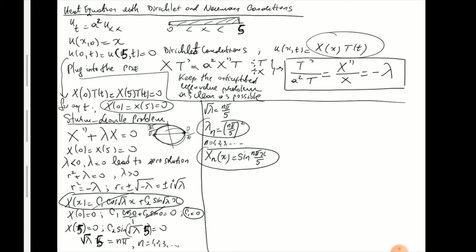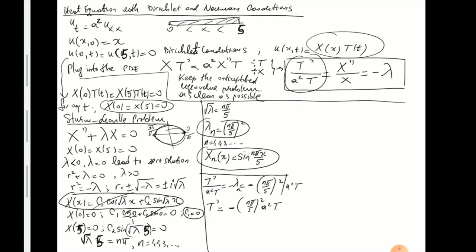We're done with the Sturm-Liouville problem. Now for each λ we move to solve the equation in T. So that is T'/(a²T) = −λ_n = −(nπ/5)². Let's multiply by a²T on both sides to eliminate the denominator: T' = −(nπ/5)² a² T. Putting this into a single square, T' = −(nπa/5)² T.